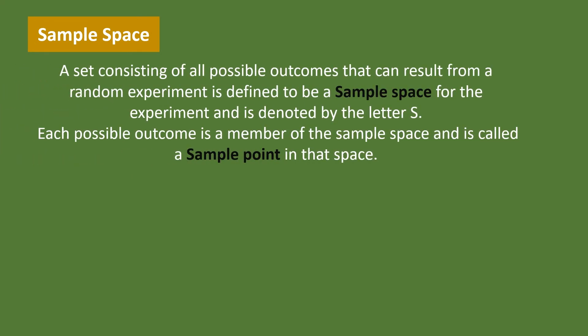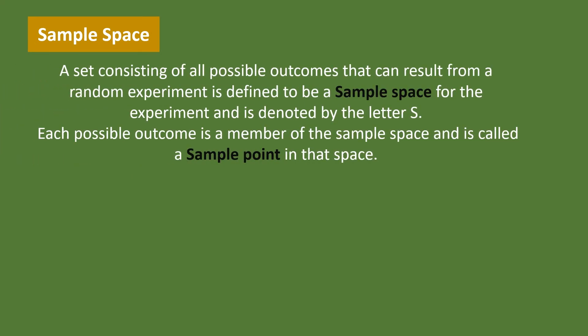Sample space. A set consisting of all possible outcomes that can result from a random experiment is defined to be a sample space for the experiment and is denoted by the letter S. All possible outcomes are called a sample space. Each possible outcome is a member of the sample space and is called a sample point in that space.